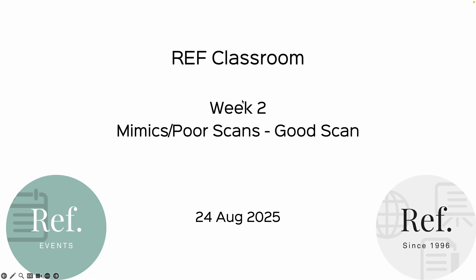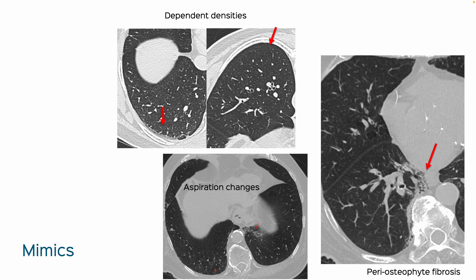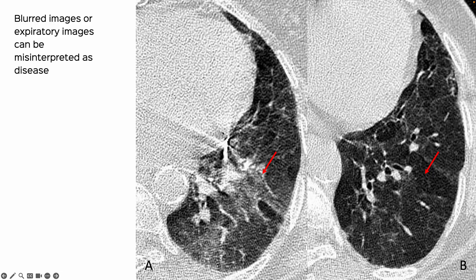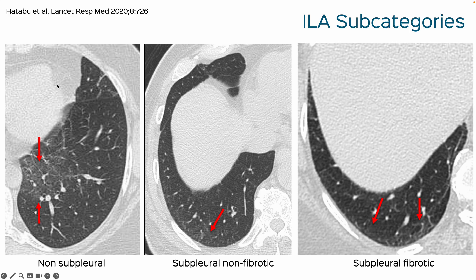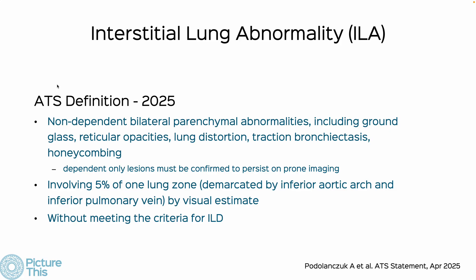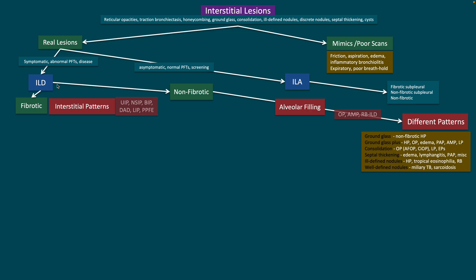Once we've identified an interstitial lesion, the next question is whether these are mimics, poor scans, or real lesions. Week two covers mimics and poor scans — aspiration changes, periosteal fibrosis, dependent densities, breathing artifacts, etc. Then, once we have real lesions, week three addresses whether it's an ILA or ILD. If the patient is asymptomatic with normal PFTs found on screening, it's an ILA; otherwise it becomes an ILD. Week three covers the different types of ILAs and the new ATS 2025 definition.